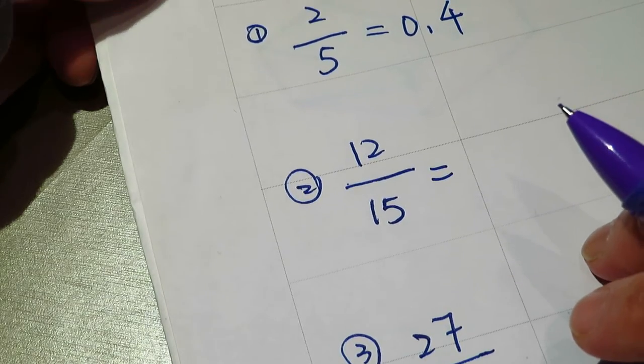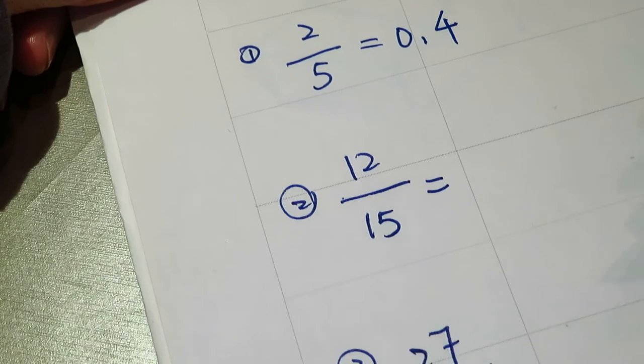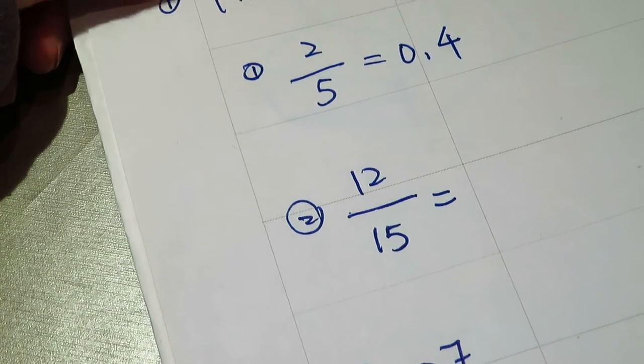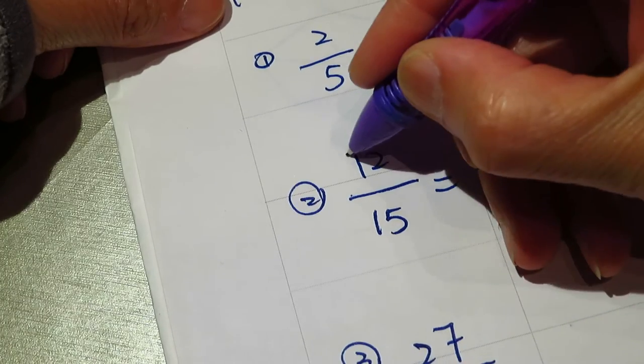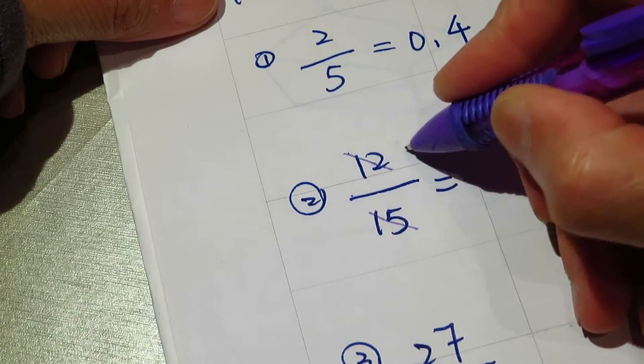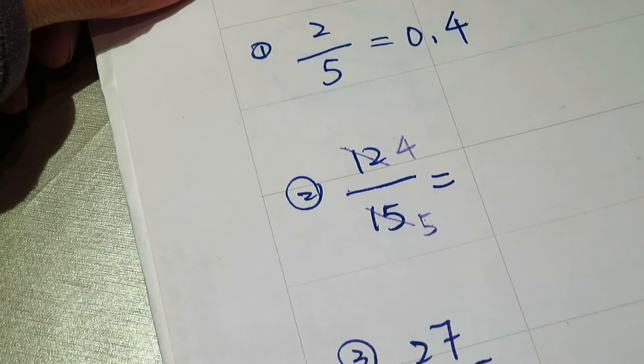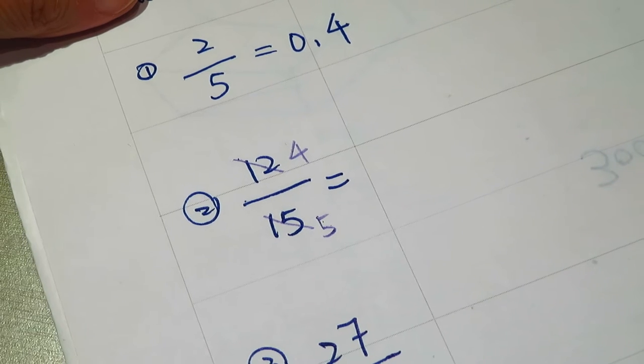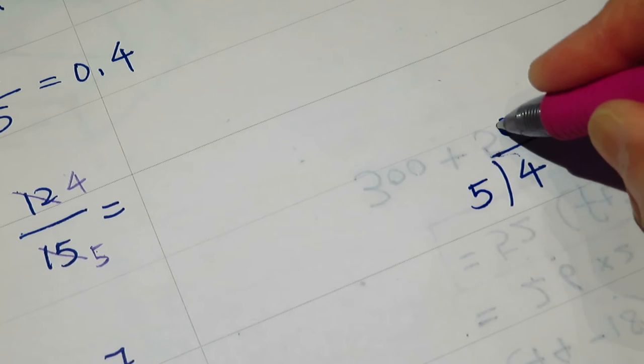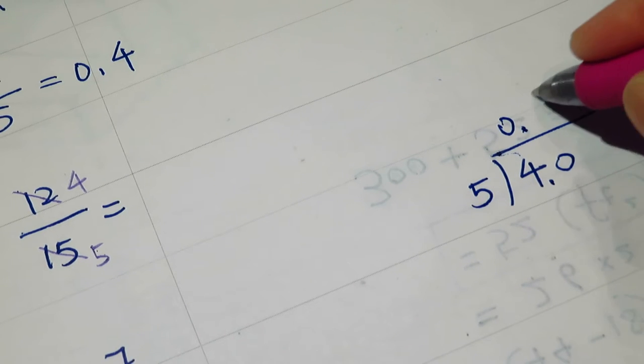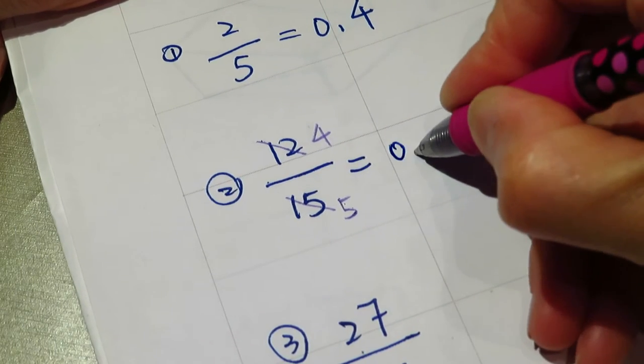This is a fraction. First thing, whenever you see a fraction, simplify it. Math needs to be elegant and beautiful. Put it until you peel it to the very bare minimum. Both are multiples of 3, so we can divide it by 3. This one is 4 over 5. Now we will do the division: 4 divided by 5, 0 point. So the answer is 0.8.